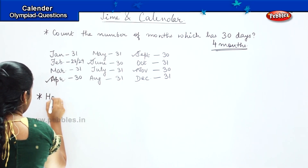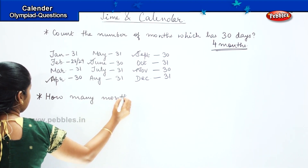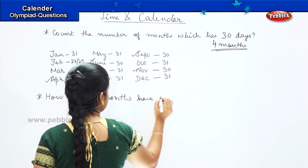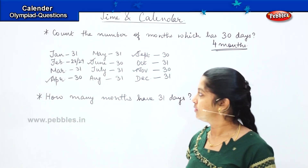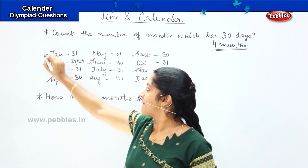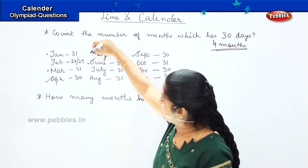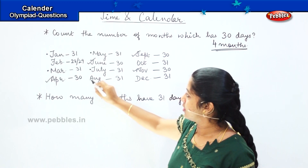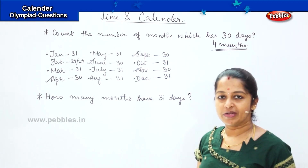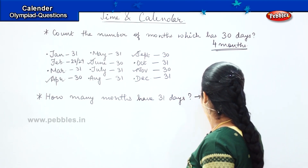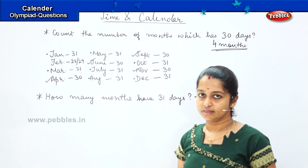How many months have 31 days? Shall we count? 1, 2, 3, 4, 5, 6, 7. How many months, children? Good — 7 months. So 7 months have 31 days.